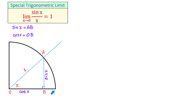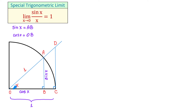Now let this point be point C. Then OC equals 1 because it is the radius of the circle. From this point we will draw a perpendicular up that will intersect the terminal side, and if this point is point D, now we have another right triangle DOC. In this triangle, tangent of x equals the opposite side CD divided by the adjacent side OC which equals 1, so tangent of x equals CD.